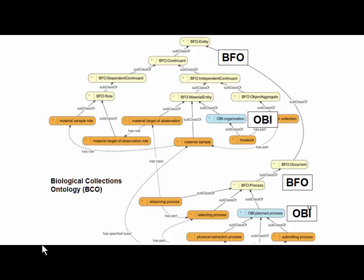Here is one example of how it works: the Biological Collections Ontology. We start with BFO at the very top, then we have OBO terms like material sample, and then for biological collections we have things like museum, observing process, selecting process, submitting process — all types of processes involved in creating biological collections. By being built underneath BFO, the ontologies become combinable in a way which is at least easier than if they were built separately from scratch.